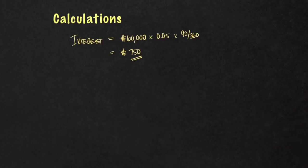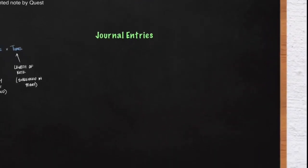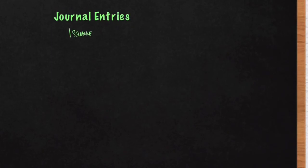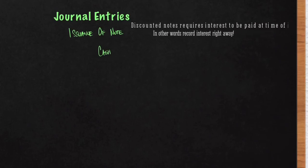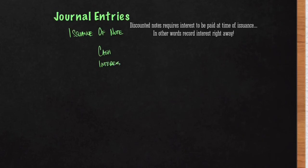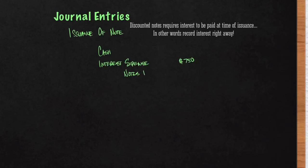We'll need that calculation for our journal entries. The first thing we're going to journalize is the issuance of the note — when we borrowed the money. It's important to note that with a discounted note, the lender will always take the interest from you right away. So the first debit is to Cash, and we have another debit to Interest Expense for $750, because we pay the interest upfront. The Notes Payable, per the contract, is $60,000.